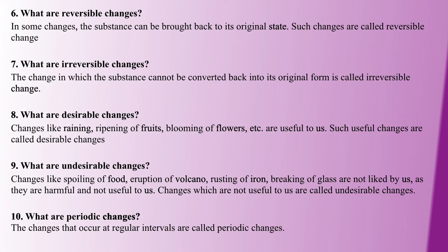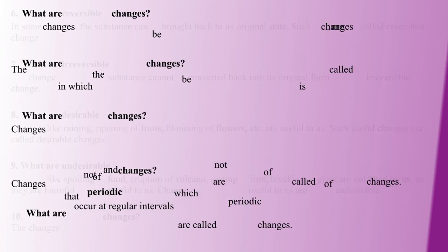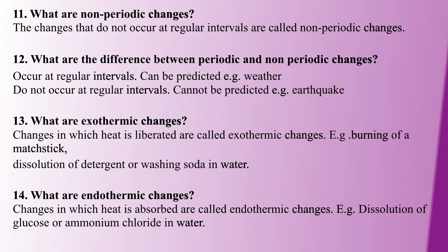Periodic changes are those that occur at regular intervals. Non-periodic changes do not occur at regular intervals. The difference between them is that periodic changes are predictable, like weather patterns.